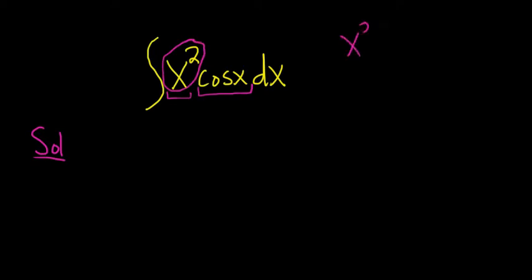So basically we write that down, and then we just take the derivative. So x squared, its derivative is 2x, its derivative is 2, its derivative is 0.